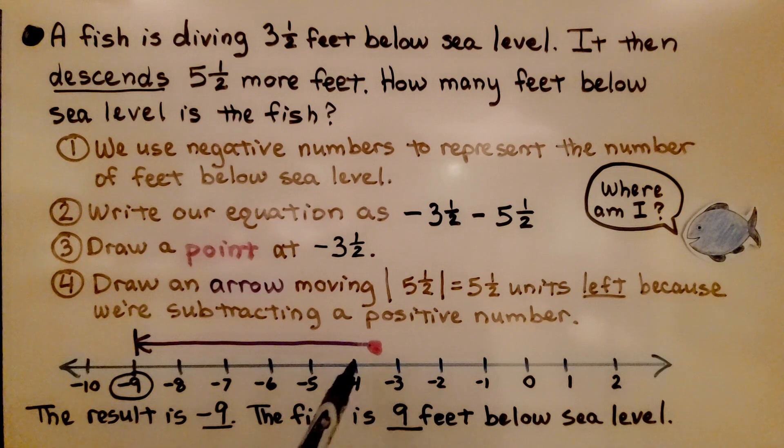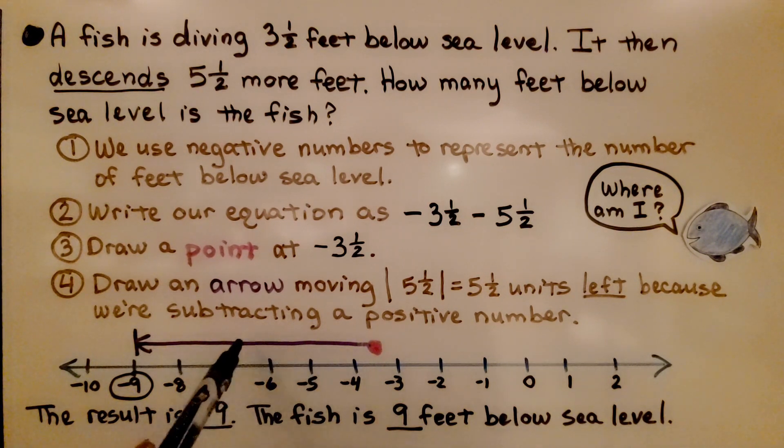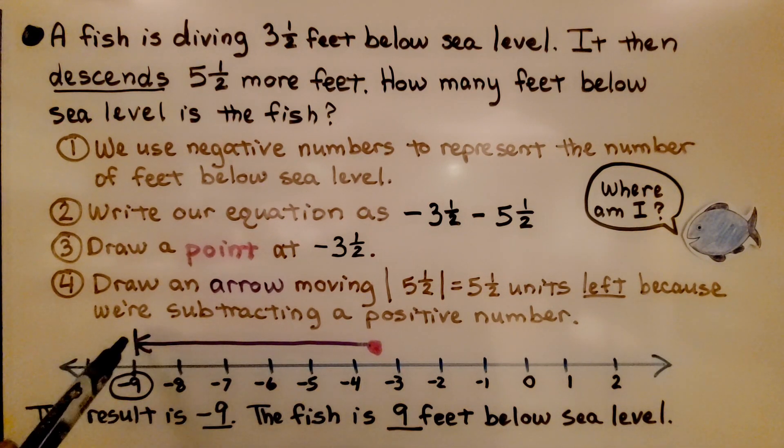We draw a point at negative 3 and a half, between negative 3 and negative 4. And we draw an arrow moving the absolute value of 5 and a half, which is 5 and a half units left, because we're subtracting a positive number. The result is negative 9. The fish is 9 feet below sea level.